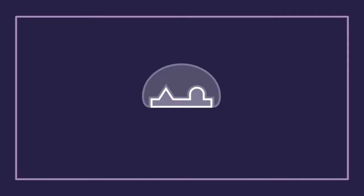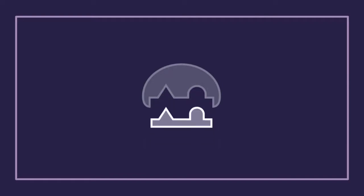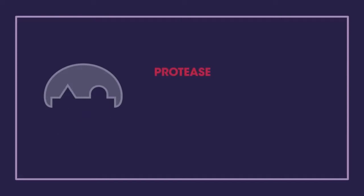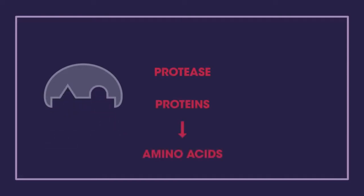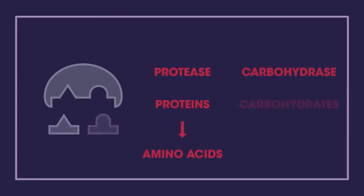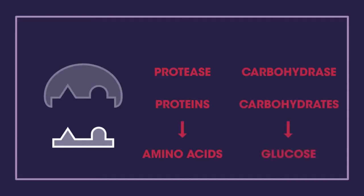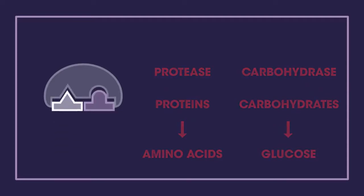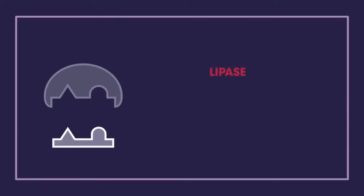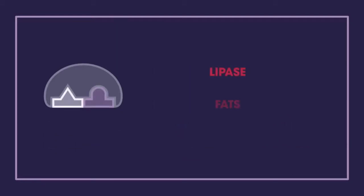In this example, the enzyme is breaking down the substrate into two smaller products. It could be protease, which breaks down proteins into amino acids, or carbohydrase, which breaks down carbohydrates into glucose, or lipase, which breaks down fats into fatty acids and glycerols.